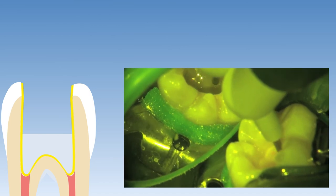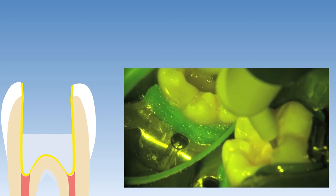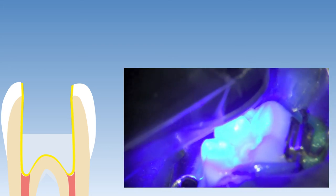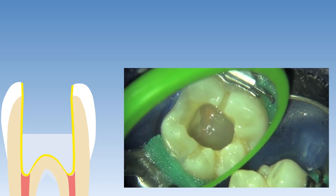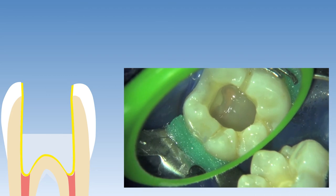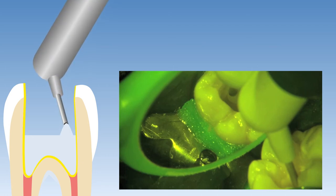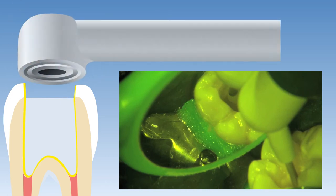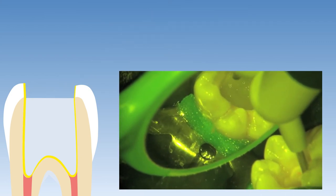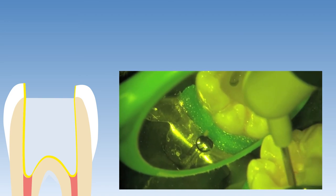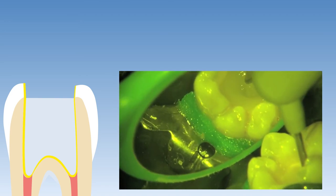Here I am dispensing the SDR material, making sure that I incorporate no voids, leaving the material to self-level, and then curing it for 40 seconds. I am curing for 40 seconds at this stage because of the depth of the cavity and the distance of the SDR material from the light. This is followed by a 4 mm increment of SDR flowable bulk-fill resin material, which is dispensed and left undisturbed to self-level before being light cured for 20 seconds.